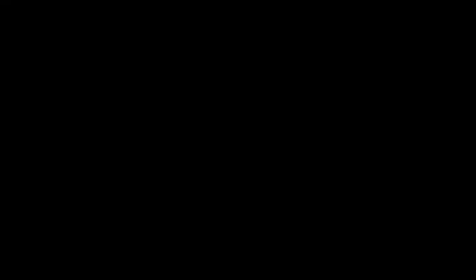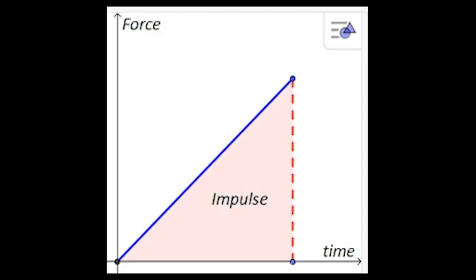What — I missed something? Oh, that's right. Impulse is a measure of an object's change in momentum. It is calculated by multiplying the force exerted on an object by the time it is exerting on the object. In a force versus time graph, the impulse would be the area under the curve. All right, that's it for me — have a good one.